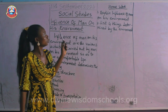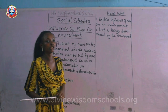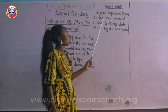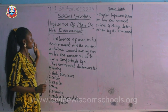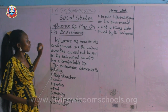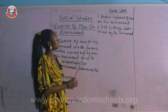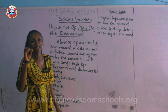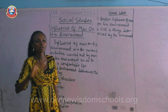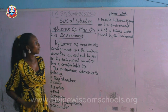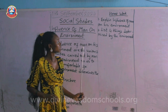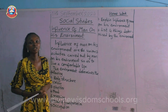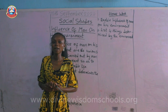With this, we have come to the end of today's topic. Here is your homework: number one, explain the influence of man on his environment — go back to your notes and read through. Number two, list four things determined by the environment. We discussed more than four, but just give me four. I hope this lesson is well understood. See you in my next class — bye for now.